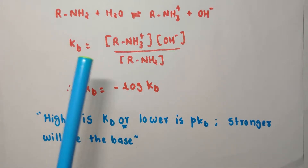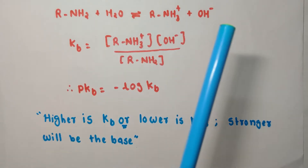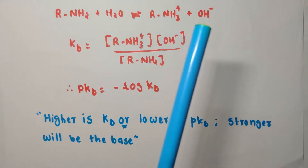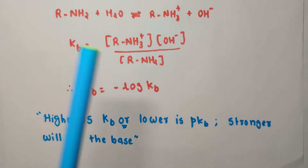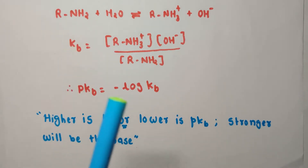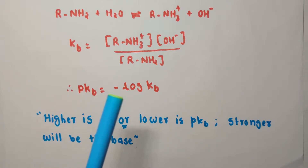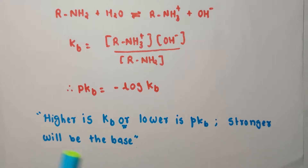Higher the value of Kb, the more the equilibrium shifts to the right, meaning greater dissociation of the base and hence it is a stronger base. And as Kb increases, pKb decreases because of the negative sign. So to summarize: higher Kb or lower pKb means a stronger base.